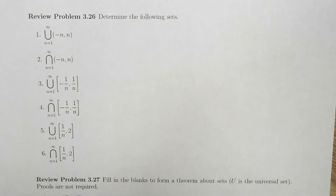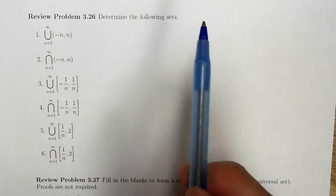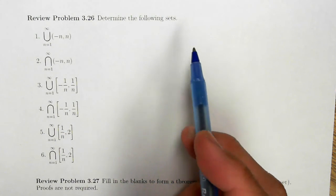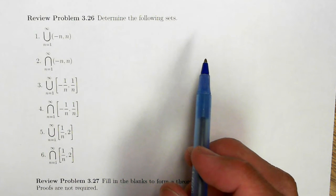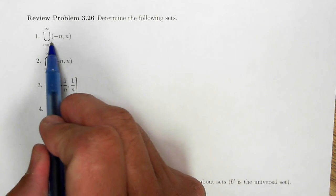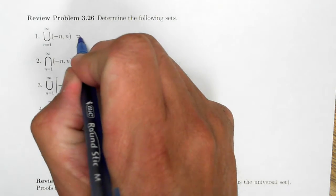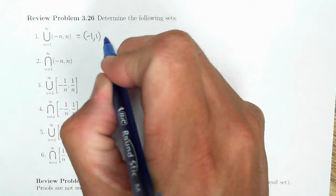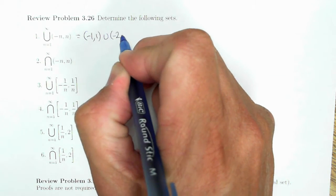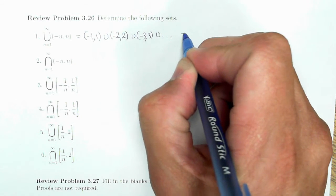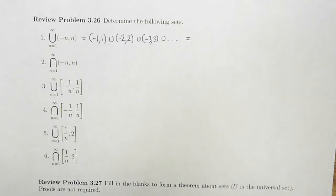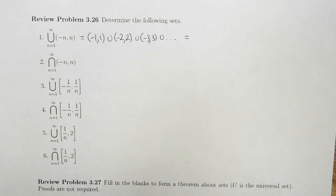Let's take a look at these infinite unions and infinite intersections, and I'll go over both the formal way of establishing the values as well as an informal way. The first one is the infinite union of this: the union of the interval from negative 1 to 1, union of the interval from negative 2 to 2, union of the interval from negative 3 to 3, and so on. I need to take the union of all these intervals, and in this problem the intervals are getting progressively bigger.